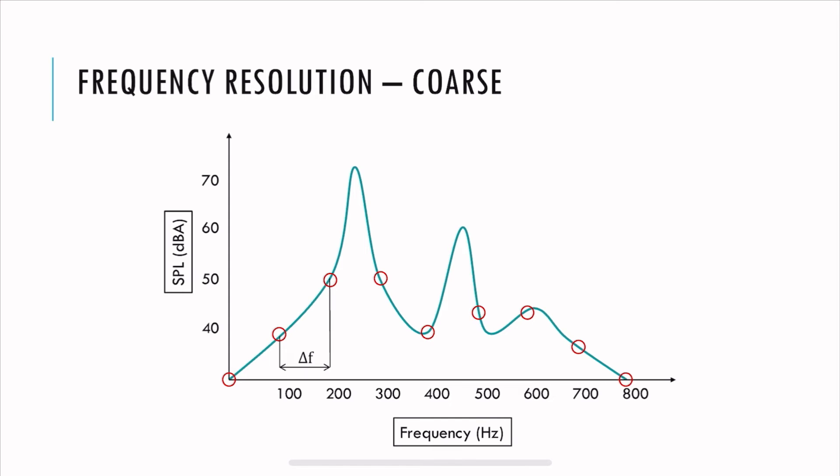Here's an example of coarse frequency resolution. The red circles represent the data points, and delta F is the distance between them. As you can see, the density is very low — delta F is high and you get a coarse frequency resolution. In contrast, with more points, delta F is smaller, the density is greater, and you get a finer frequency resolution.